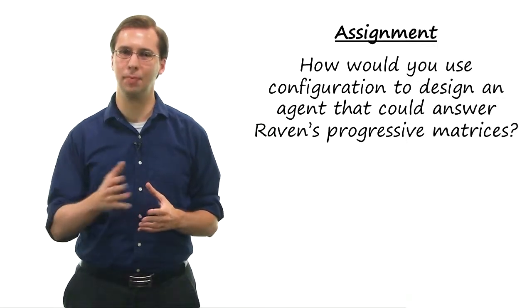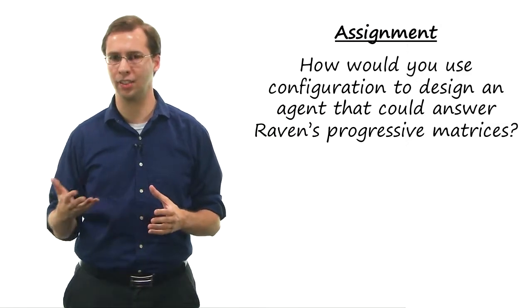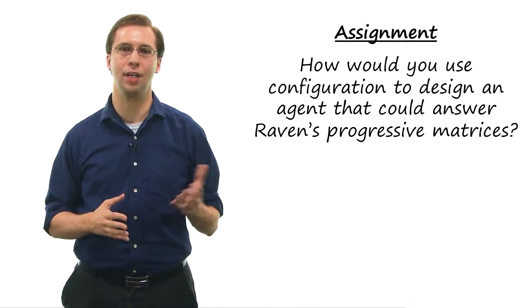If configuration is a type of constraint propagation, how can you leverage the idea of variables and values in designing your agent? What are the variables and what values can they take?